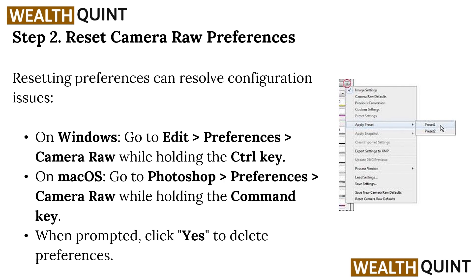Step 2: Reset Camera Raw preferences. Resetting preferences can resolve configuration issues. On Windows, go to Edit, then click on Preferences, then click on Camera Raw while holding the Ctrl key. On macOS, go to Photoshop, then click on Preferences, then click on Camera Raw while holding the Command key.